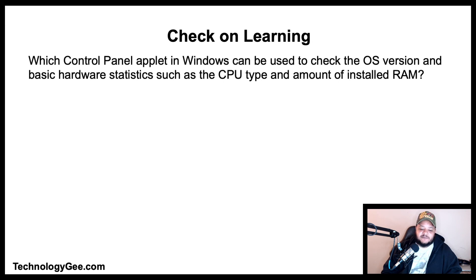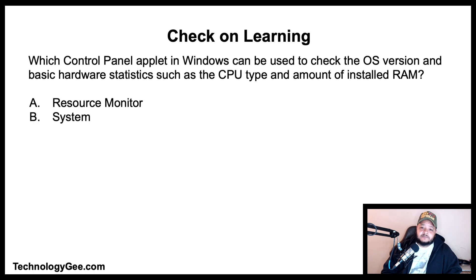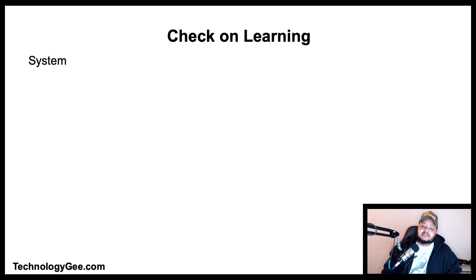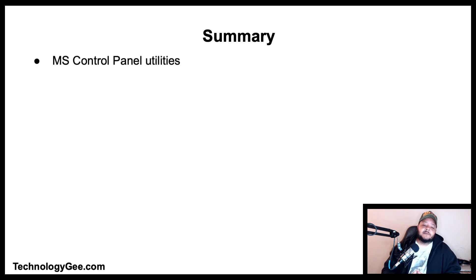Question three: Which Control Panel applet in Windows can be used to check the operating system version and basic hardware statistics such as the CPU type and the amount of installed RAM? Is it System, Computer Management, or System Configuration? The correct answer is System.